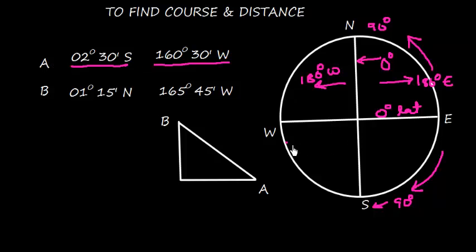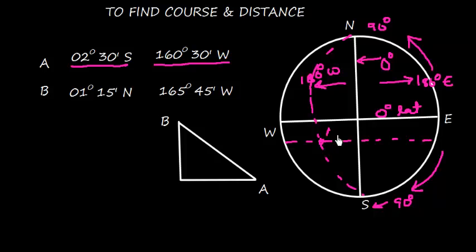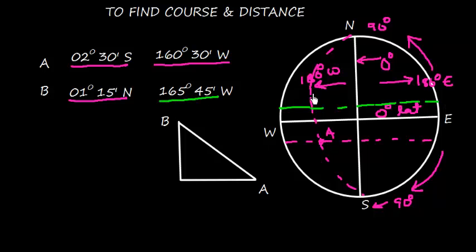Suppose this is point A. Point A will be in the southern hemisphere — this is 2 degrees 30 minutes south and 160 degrees west, so this meridian will be somewhere like this, giving us point A. Similarly, point B is 1 degree 15 minutes north, so it is in the northern hemisphere, and the longitude is 165 degrees, which is further west.